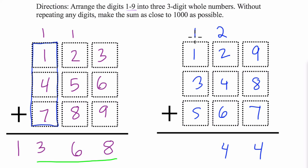And then 3 plus 1 plus 1 is 5, plus 5 is 10. Notice we're a lot closer to 1,000. We're only 44 away.